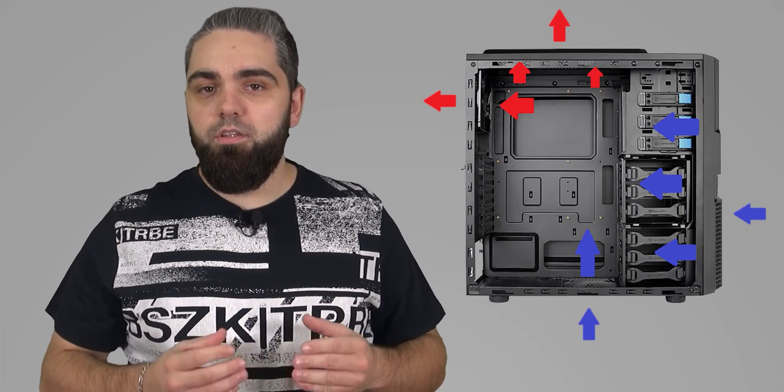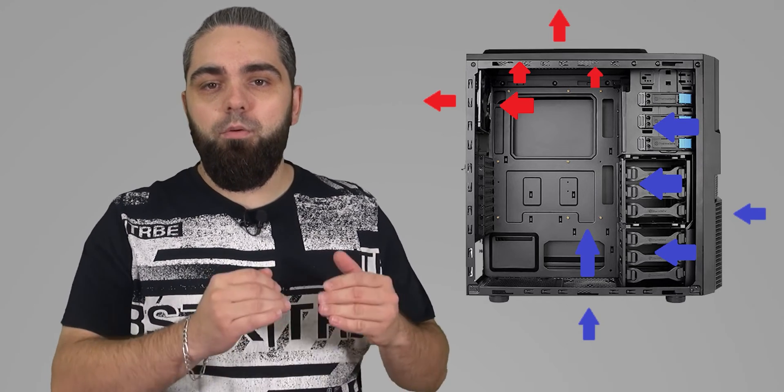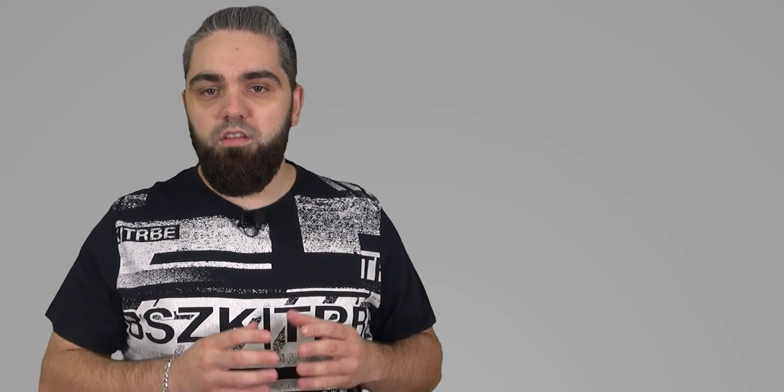It is recommended to equalize the amount of air entering and leaving the case, so the amount of air supplied is slightly higher in order to achieve a slightly positive air pressure. Another thing you should pay attention to is the movement of the air in the case itself. The air should be moving from front to back or from bottom to top of the case, and it is necessary for air to pass over all components in order to cool them down.